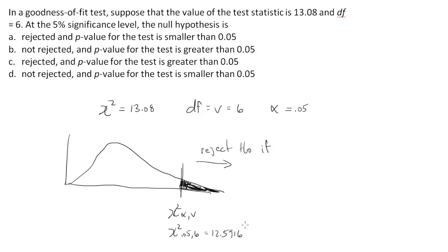12.5916. So I'm going to say we will reject the null if chi-squared is greater than 12.5916. So that's our rejection region. Now, we have our chi-squared value right here, and it is greater than 12.5916. Therefore, we're going to reject the null hypothesis. So the answer is going to have to be A or the answer is going to be C, so we've got to figure out which one of those works.